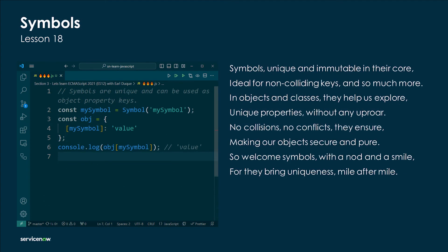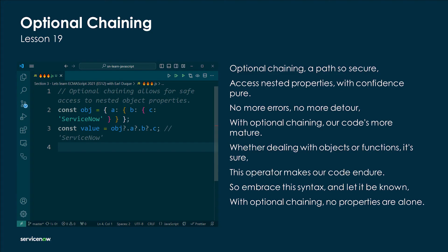Symbols — unique and immutable in their core, ideal for non-colliding keys and so much more. In objects and classes they help us explore unique properties without any uproar. No collisions, no conflicts they ensure, making our objects secure and pure. So welcome symbols with a nod and a smile, for they bring uniqueness mile after mile.